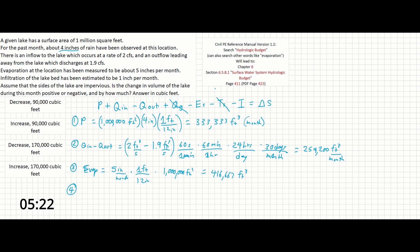Next, we have no transpiration given in this problem, but we do have infiltration, and that's been estimated at 1 inch per month. 1 inch per month times 1 foot over 12 inches times 1 million square feet in the lake. And this will give us 83,333 cubic feet.